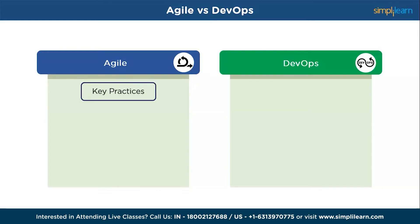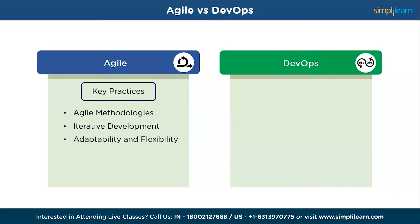Next, we have key skillset practices. For Agile, a solid understanding of Agile principles, frameworks, and methodologies enables effective planning, iterative development, and continuous improvement. Agile professionals should be comfortable working in short iterations and delivering incremental value. They should also be open to change and adapt plans and priorities as needed. Some standard Agile practices include Scrum, Kanban, and Extreme Programming.